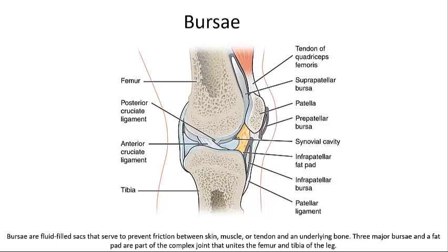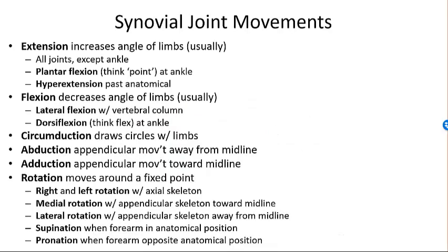A meniscus is a pad of fibrous cartilage found between opposing bones within a synovial joint. Menisci may subdivide a synovial cavity, channel the flow of synovial fluid, or allow for variations in the shape of the articular surface. Ligaments support, strengthen, and reinforce synovial joints. Intrinsic ligaments, also called capsular ligaments, are parallel bundles of fibers creating thickening within the joint capsule. Extrinsic ligaments may pass outside (extracapsular) or inside (intracapsular) the joint capsule.